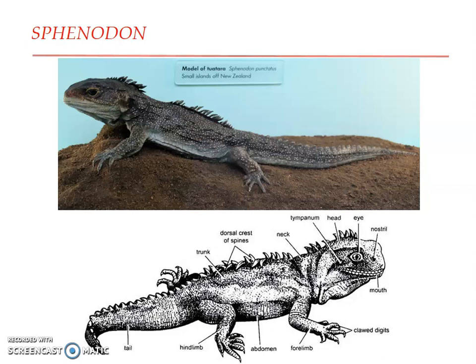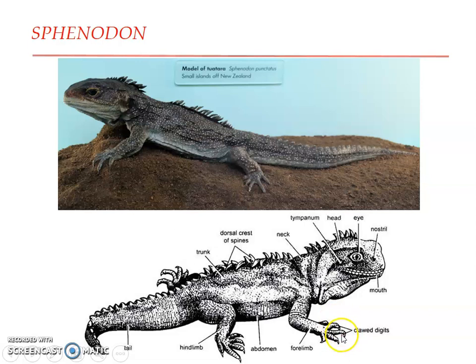They are carnivores feeding on invertebrates like worms, insects, spiders, molluscs, etc., and fishes. Externally, Sphenodon looks like a lizard — it is a lizard-like reptile. It measures about 60 cm in length and possesses scaly skin and a long, laterally compressed tail. It has fore-clawed pentadactyl limbs adapted for walking, and its upper surface has granular scales. There is a median row of scales forming spines — a dorsal crest of spines running continuously from head to tail, except on the neck.